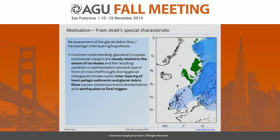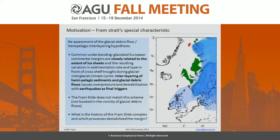It's believed that earthquakes are very likely to have been the final trigger for those landslides. The Fram slide is located northwest of Svalbard, and you can see that it doesn't match this hypothesis, because it's located about 35 kilometers from the nearest trough mouth fan. So this might be a good opportunity to study which other mechanisms might be important for the occurrence of landslides, and I study the history of this complex to find out which mechanisms and processes destabilize the margin.